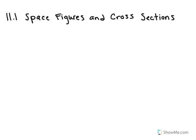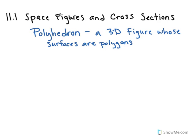This is section 11.1, Space Figures and Cross Sections. The first thing we're going to talk about is a new vocabulary word called polyhedron. A polyhedron is a 3D figure whose surfaces are polygons.